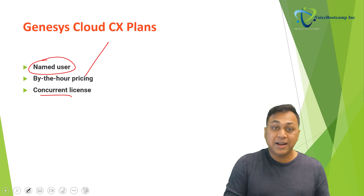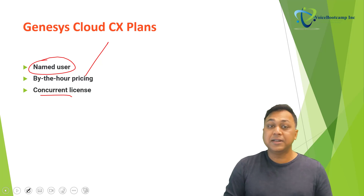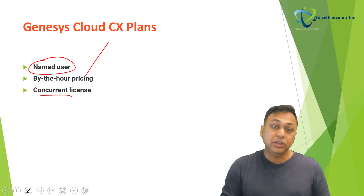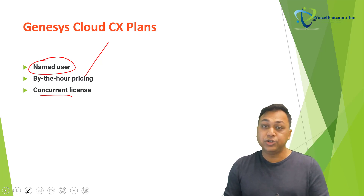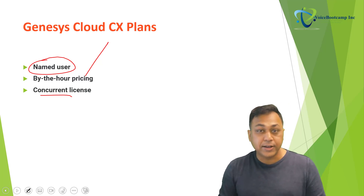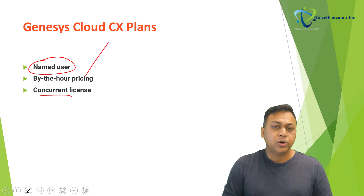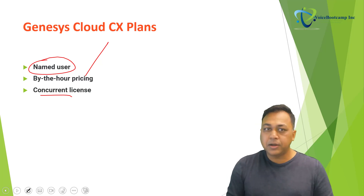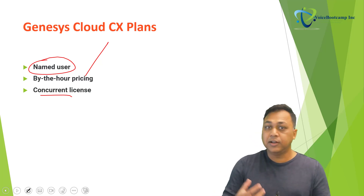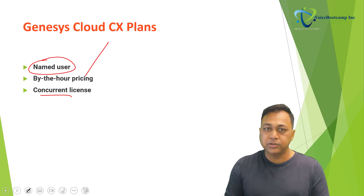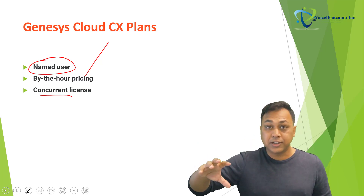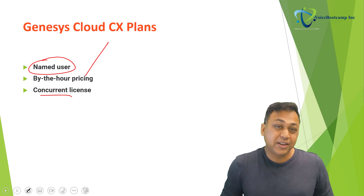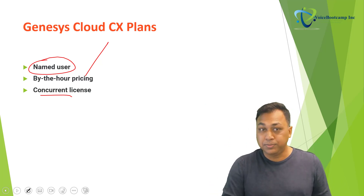The by-the-hour pricing plan allows businesses to choose Genesis Cloud and only pay for the hours that they use. It can be a good model for firms that have many part-time users or very spiky intra-month peaks where users may only need to be available for a few days or few hours. For example, if generally during the last week of the month you need more agents because there is always a spike in customer calls, you can go by the hour during that last week — paying a little bit more then, but a little bit less during other quieter times.